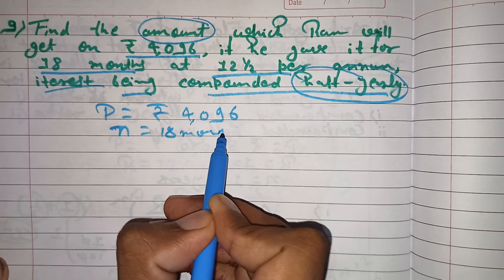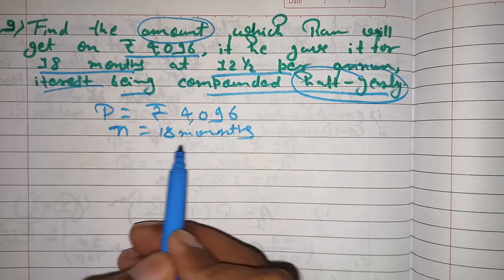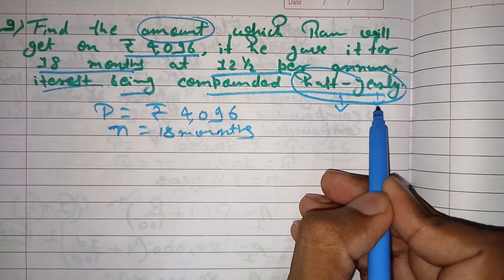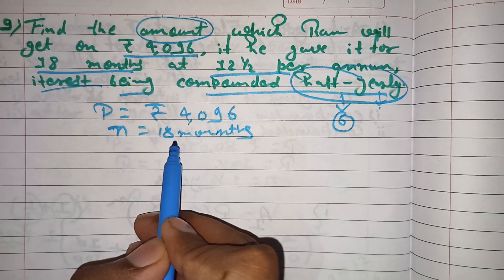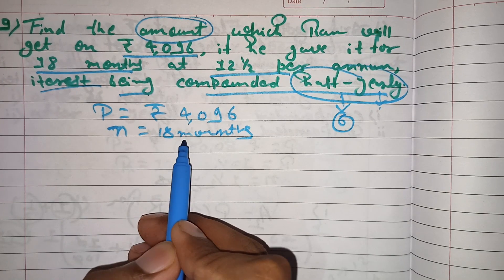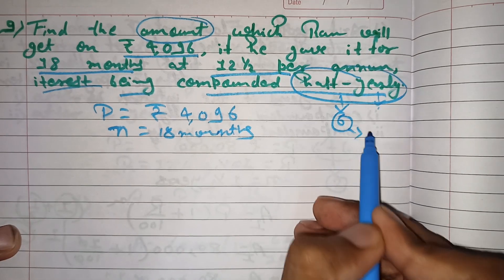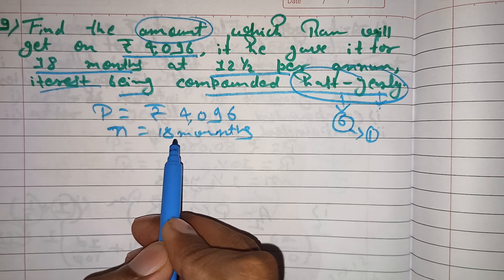One thing we know is, since it's compounded half yearly and the time is 18 months, half yearly means 6 months. So 18 months equals 3 half-yearly periods, meaning n equals 3.